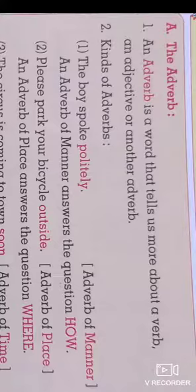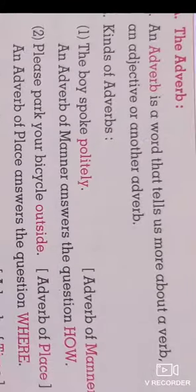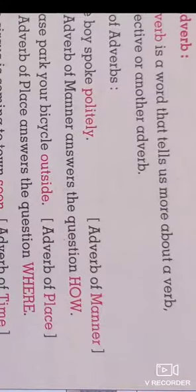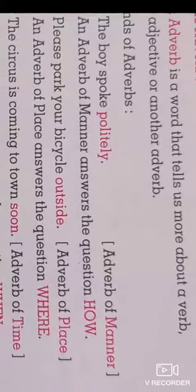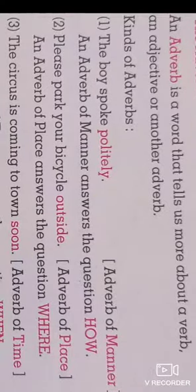Here are some kinds of adverbs. Look at the sentence: 'The boy spoke politely.' The adverb here is of manner. An adverb of manner answers the question 'how.' When we ask 'how did he speak,' we get the answer 'politely.' So 'politely' is the adverb here.